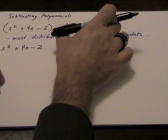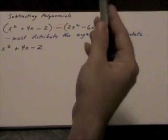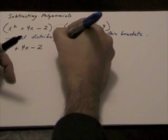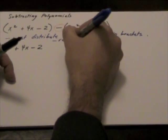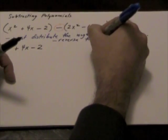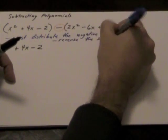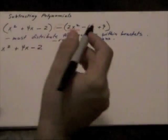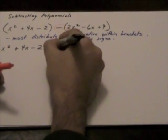The second set of brackets, what we're going to do is we are going to reverse the signs. So in other words, this 2x squared is positive inside the brackets. So what we're going to do is we're going to make it negative.